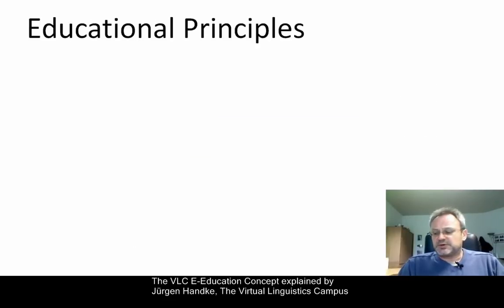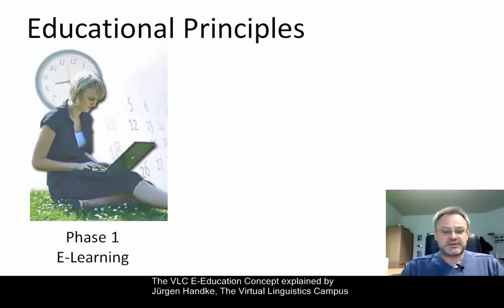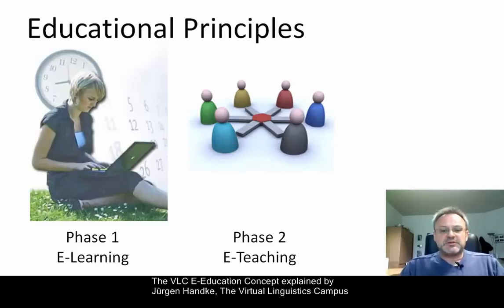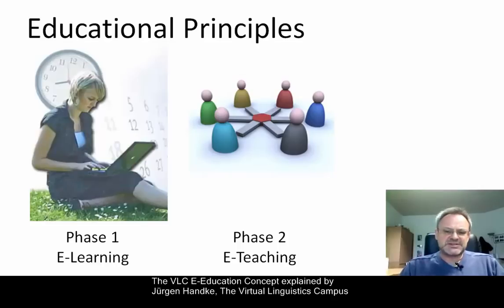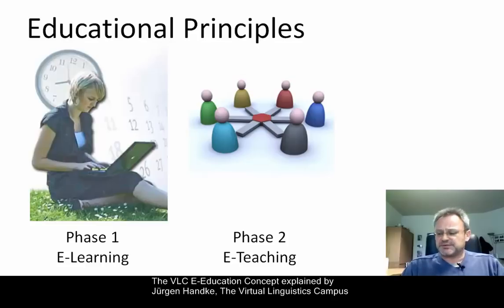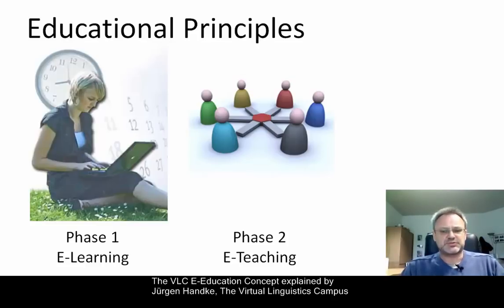The educational principle is pretty clear. In phase one, the phase of e-learning, you are now the autonomous learner. In phase two, where we will meet in class, classical frontal teaching is now almost out. The central teaching method is that of a cooperative interaction between instructor and students.